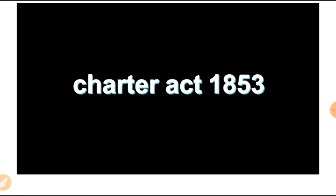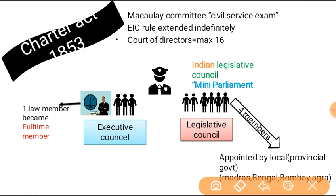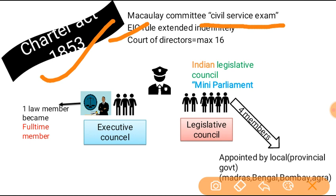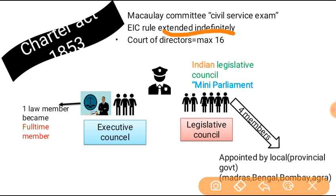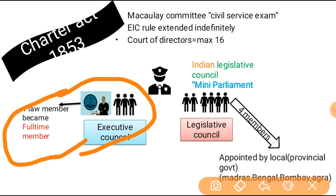Charter Act 1853 — PDFs for all these videos are available on the Telegram channel. This is the final and last Charter Act. The most important point: the Macaulay Committee, which was formed to conduct the civil service exam, got the green light — yes, you can conduct the civil service exam, and a college committee was formed for it in 1854. The East India Company's rule was now extended indefinitely — not for 20 years as before, but indefinitely, meaning it could be ended at any time. The Court of Directors was told to keep a maximum of 16 members.